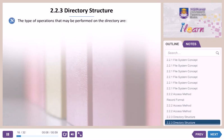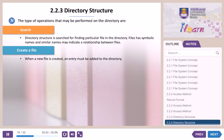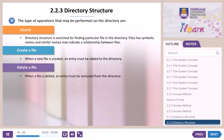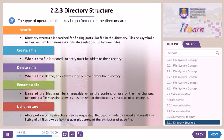The types of operations that may be performed on the directory are: Search — the directory structure is searched for finding a particular file; files have symbolic names and similar names may indicate a relationship between files. Create a file — when a new file is created, an entry must be added to the directory. Delete a file — when a file is deleted, an entry must be removed from the directory. Rename a file — the name of the file must be changeable when the content or use changes; renaming may also allow its position within the directory structure to change. List directory — a portion of the directory may be requested, resulting in a listing of all files owned by that user plus some of their attributes.